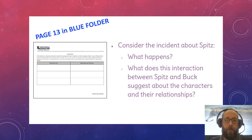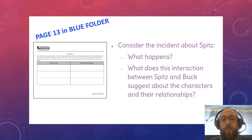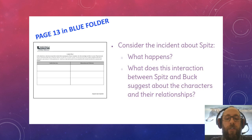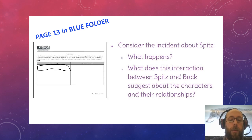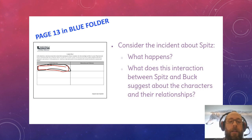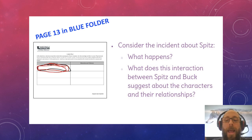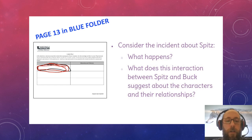Let's look at the incident about Spitz. What happens? What does this interaction between Spitz and Buck suggest about the characters and their relationship? The first question is: what happens with Spitz? Fill that in in the incident summary box. You can go back to page 12 — the very top, reading down the first half paragraph and the next paragraph that follows. Push pause and describe in basic words what happened, who did what to who.